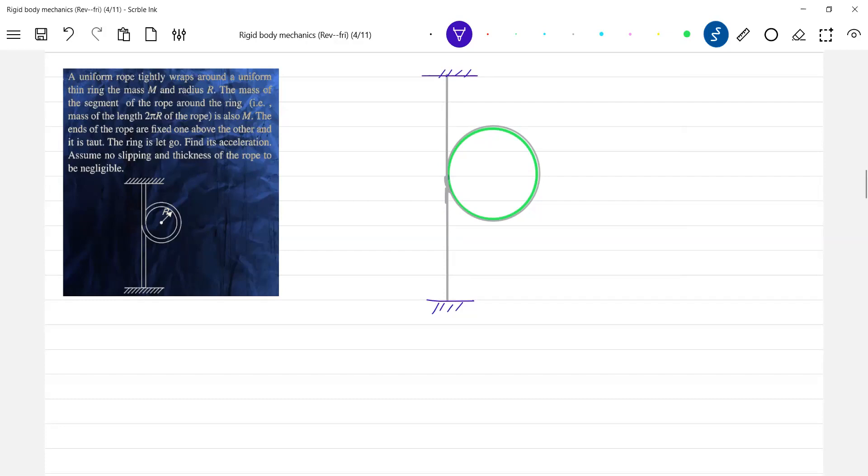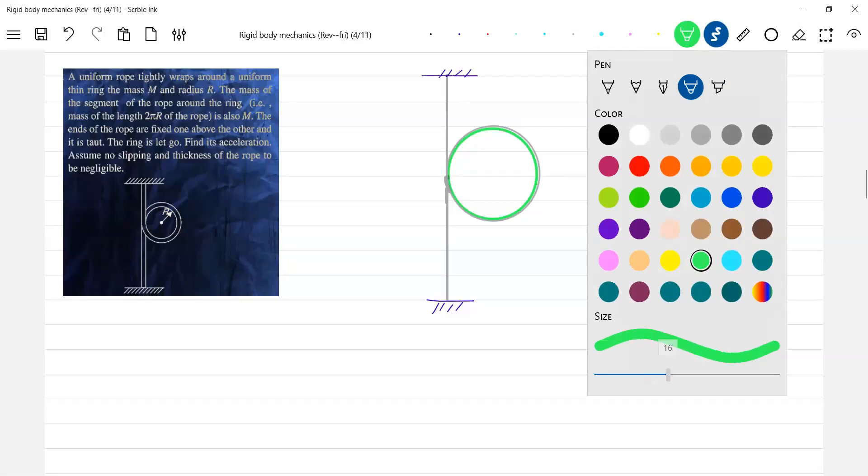There are two things: the ring as well as the rope. Ring a little bit thick, make it.